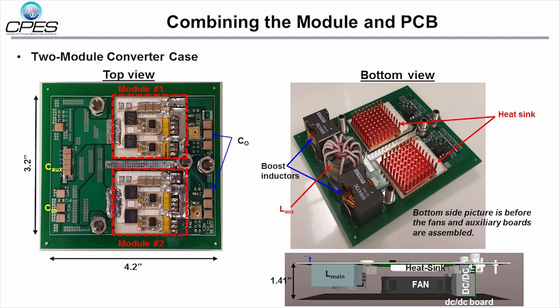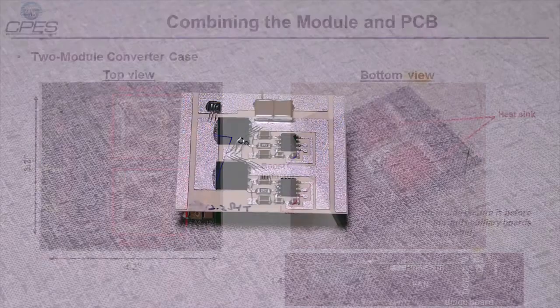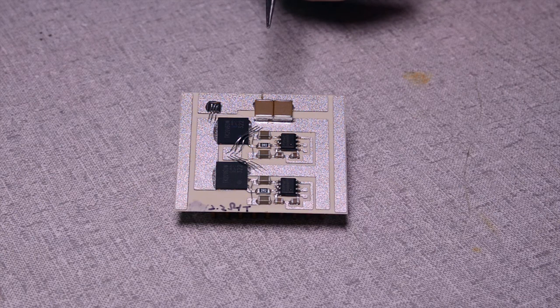On the top side, you can see capacitors, and beneath the bottom side, the magnetic elements and the heat sinks of the switch modules are shown.